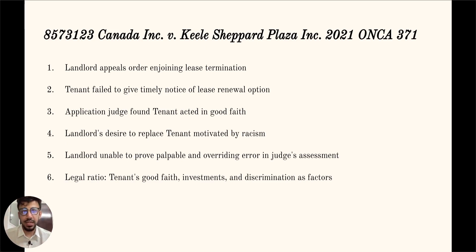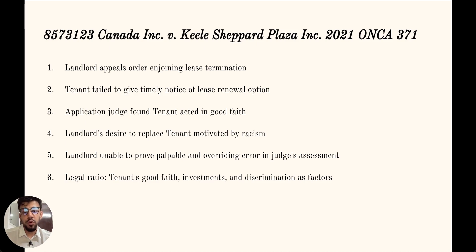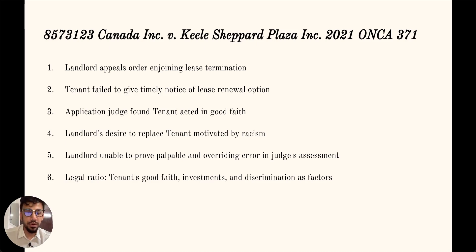In this case, the landlord appealed an order enjoining it from terminating the tenancy of the tenant due to the tenant's failure to give timely written notice of its intention to exercise an option to renew the lease. The tenant failed to give written notice prior to the date set out in the lease. The application judge found that the tenant had initiated the lease renewal process by attempting to contact the landlord and its property manager before and after the option exercise date, but the calls were not returned and were studiously avoided. The judge also found that the tenant had acted in good faith, had made substantial investments in their premises, and had never missed a rent payment.